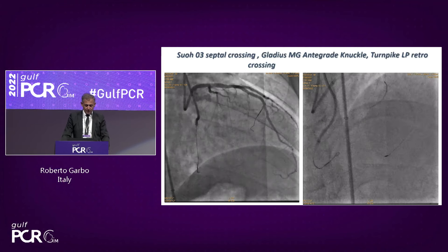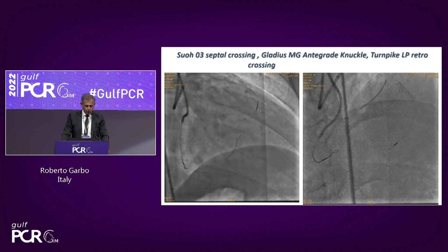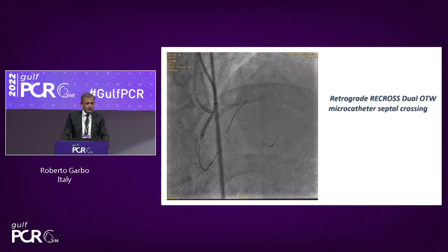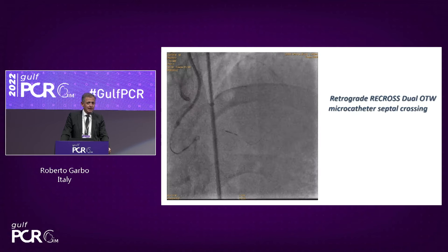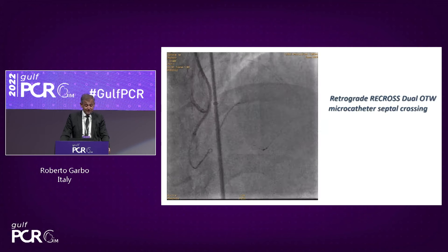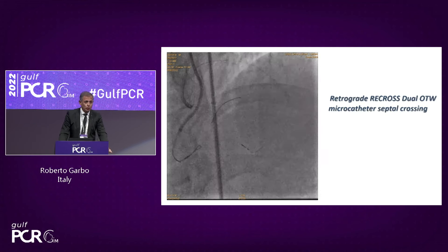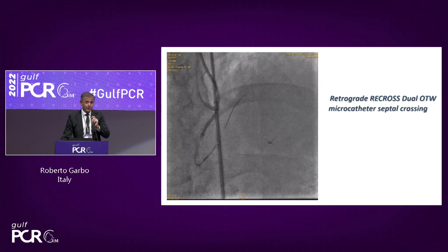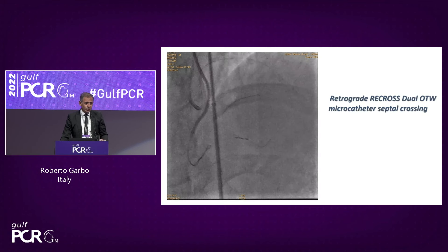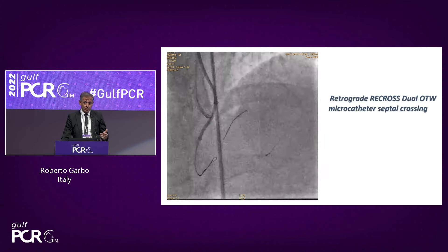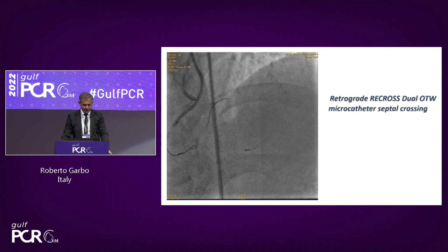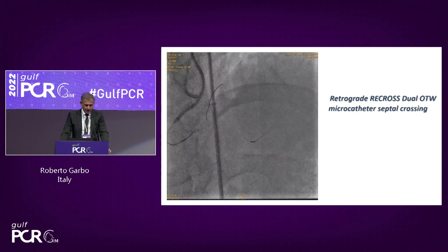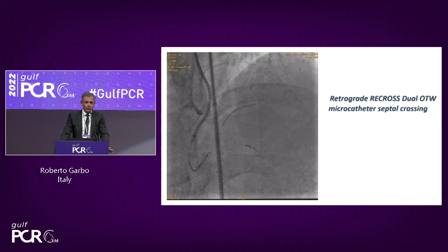We have the Gladius Mongo antegrade and the Turnpike LP with SWO 3 in the posterior branch. I had a problem with the puncture — I removed the SWO, tried to puncture with the Gaia, but had no way to puncture because it was not stable. I decided to leave the SWO on the posterior branch and take a dual-lumen microcatheter from the septal — the Recross, a new dual-lumen over-the-wire device with two lumens allowing two wires simultaneously. Advancing the dual-lumen retrograde through the septal required no contrast at all.